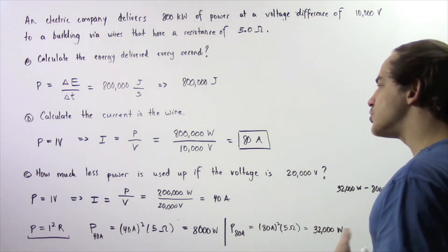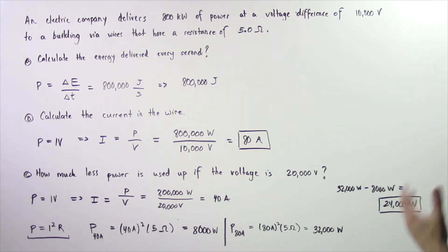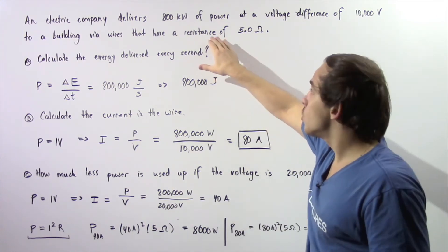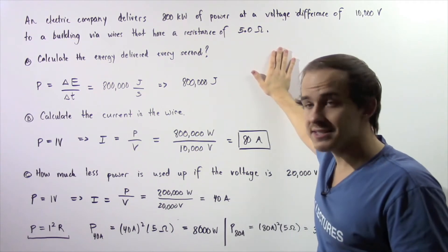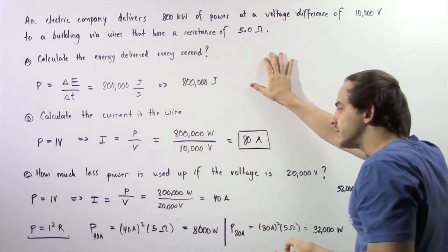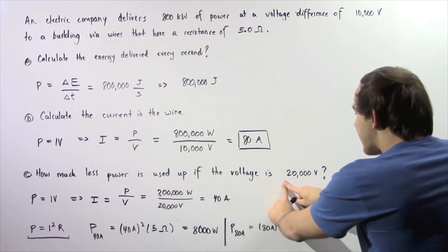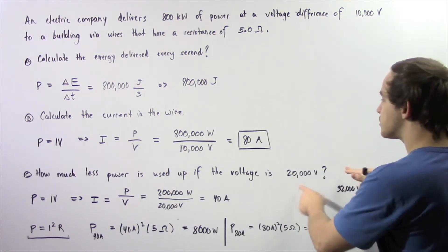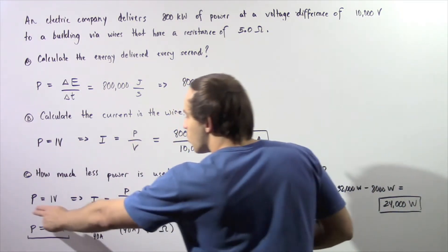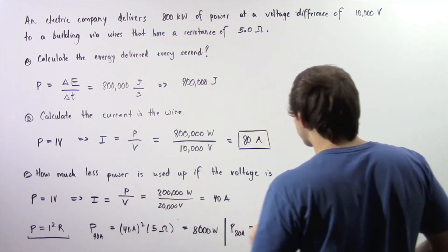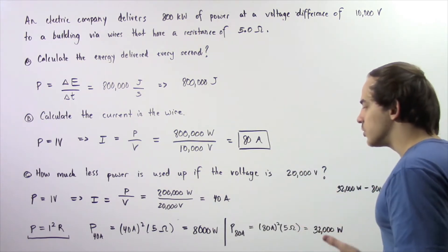In part C, we want to figure out how much less power is used up if the voltage is 20,000 volts — specifically, how much power is used up by our resistor. The wire has a 5 ohm resistance and will use up a certain quantity of energy. We first calculate the electric current at 20,000 volts: P equals I times V, so I equals P divided by V, giving us 800,000 watts divided by 20,000 volts, which equals 40 amps.